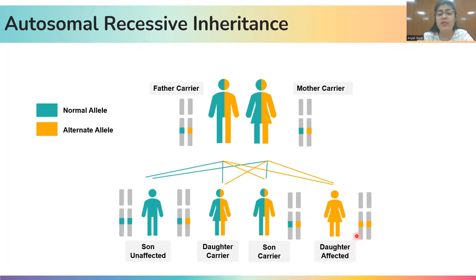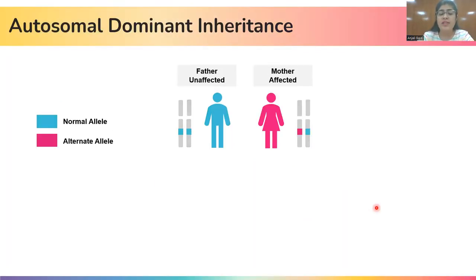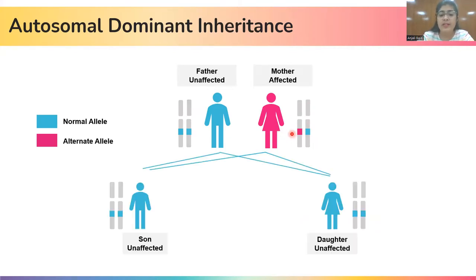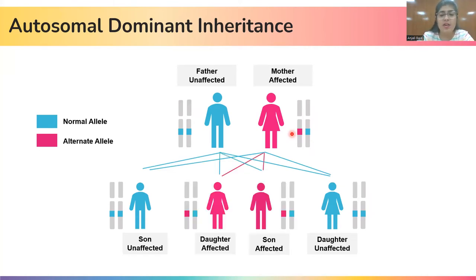For the child to be affected in autosomal recessive inheritance, both of the alleles should be of the alternate type. Whereas in case of dominant disorders, if the mother is carrying the variant allele and is affected, then there can be two possible scenarios for the child: either the child can be unaffected or the child can be affected. In this case, only one alternate allele is enough to make the child affected.